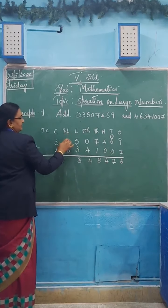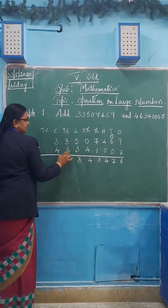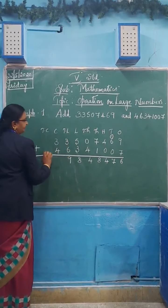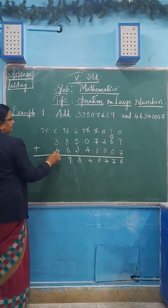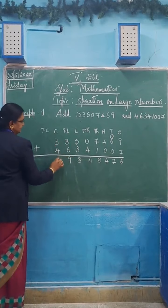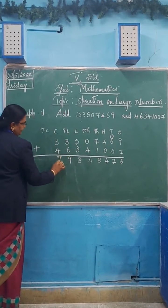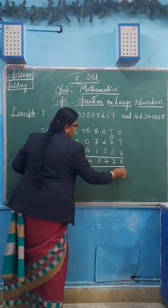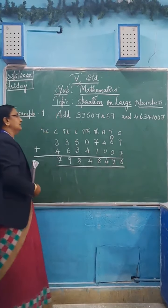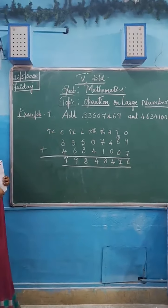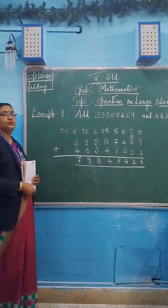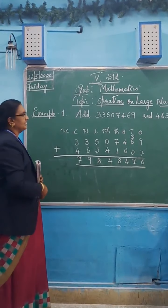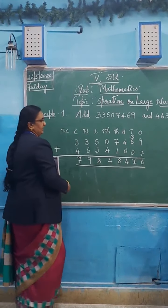And here at the crores place: four plus three is seven. So this is how we have to do the addition from the right hand side.